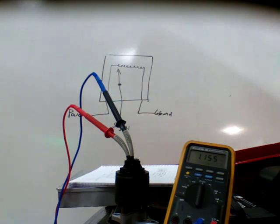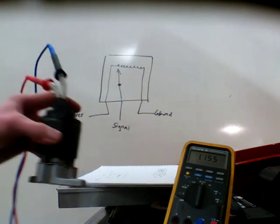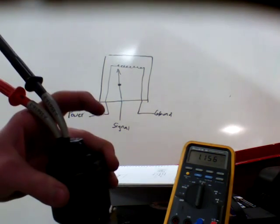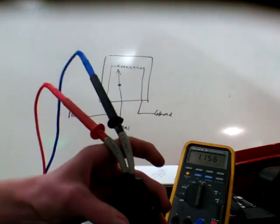Alright, now say you had a P0-1406 code come up, which is EGR valve pintle position circuit. How would you test that? Well, here I've removed the EGR valve. I've probed two wires of the 5-wire connector.